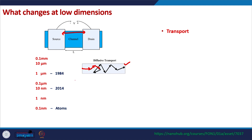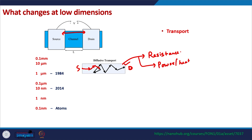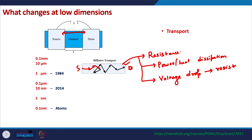Because of these collisions the path of the electron is zigzag or very random. By the time the electron reaches the drain side from the source side, it has already undergone many collisions. This is the conventional picture of resistance — resistance is because of collisions in the channel — and power dissipation or heat dissipation is also because of this. The voltage drop is closely related to resistance through Ohm's law: V equals I times R.